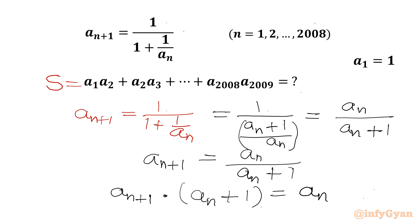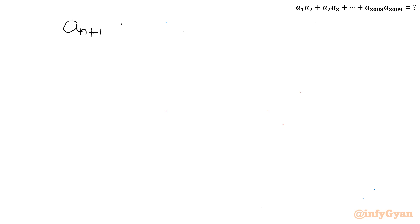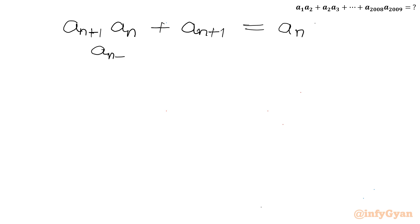Now I will expand. So I get a_{n+1} * a_n + a_{n+1} = a_n. Taking a_{n+1} away from both sides, we get a_{n+1} * a_n = a_n - a_{n+1}.